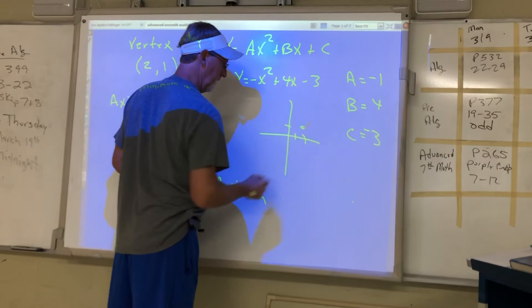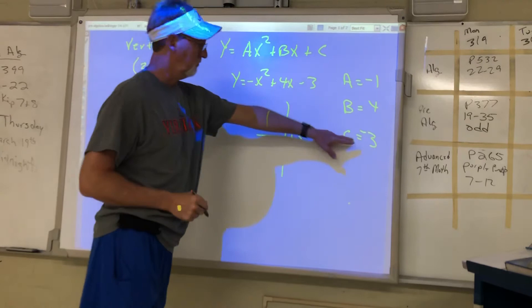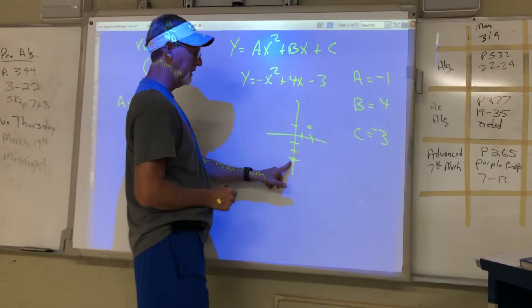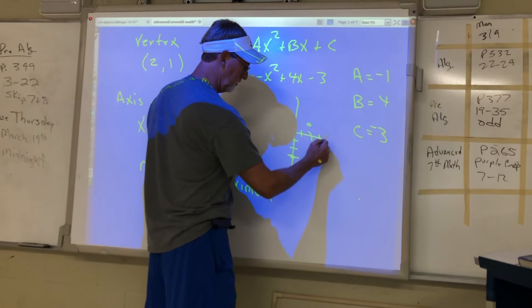Now again, we can use the y-intercept, which is the C. And go to negative 3, put a dot on the negative 3 on the y. Well, that was 2 spaces to the left of the vertex. So we go 2 to the right of the vertex and go down to negative 3.